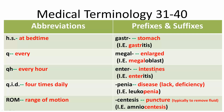We have enter, meaning intestines — enteritis is the inflammation of the intestines. We have penia, a condition indicating a lack or deficiency of something — leukopenia is the decrease in white blood cells. Entesis means puncture, typically to remove fluid, as in amniocentesis.